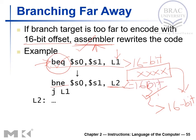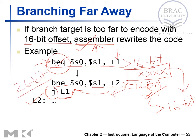If s0 and s1 are not equal, the BNE jumps to L2, skipping the long jump. If they are equal — meaning the original BEQ condition was true — sequential execution falls through to a J (jump) instruction targeting L1. Since J-type instructions have a 26-bit address field, they can handle targets beyond 16-bit range. If the original instruction were BNE, the assembler would start with BEQ instead.